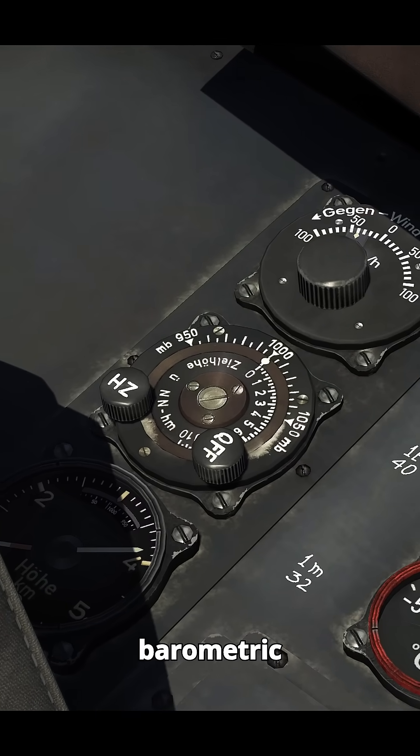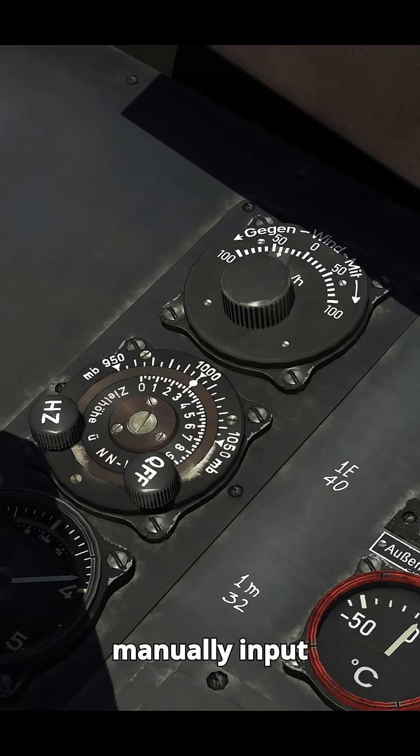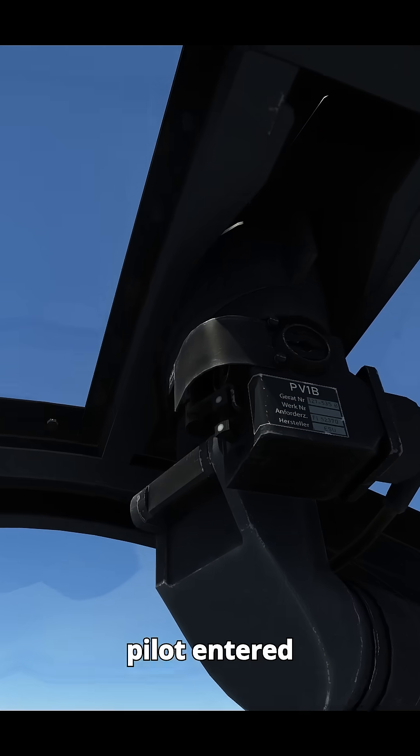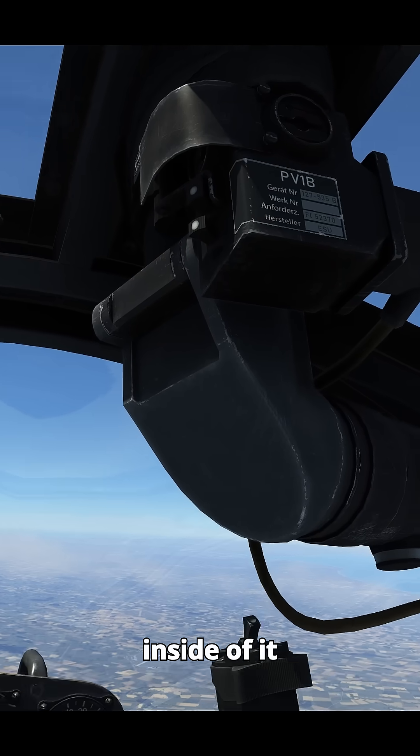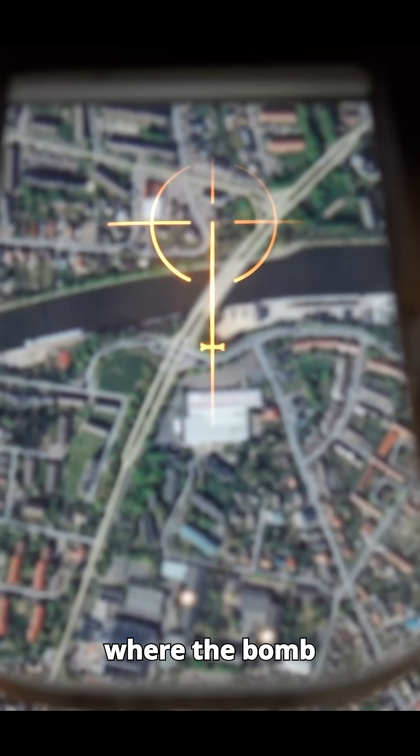For variables like barometric pressure, wind speed, and target elevation, the pilot had to manually input them. Once the pilot entered a dive, he would aim using a periscope, and inside of it, there was a shifting impact point, a moving reticle that showed exactly where the bomb would land.